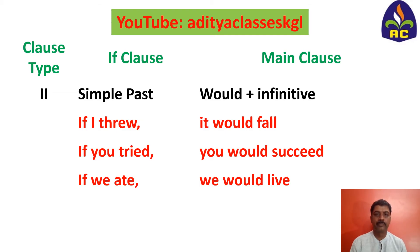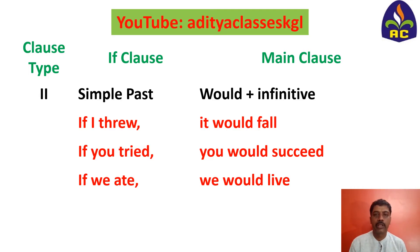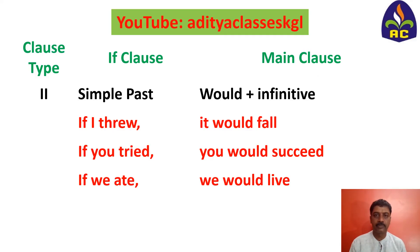Second conditional: this explains about the action which is doubtful to happen. The if clause uses simple past, and the main clause uses would and infinitive. The infinitives are: fall, succeed, live. And in the if clause we use past simple like: take, took; see, saw; eat, ate. So took, saw, and ate are past simple.